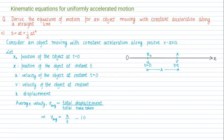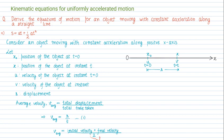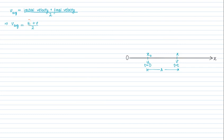There is one more way to find average velocity: the sum of initial velocity and final velocity divided by 2. Looking at our expression, the initial velocity is u and the final velocity is v. So I can write average velocity as (u + v) / 2.